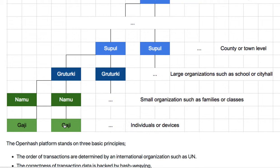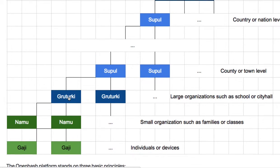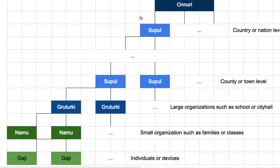Each Gazi represents each market participant — they are called Gyanu. Each Gazi represents each Gyanu, and they produce transaction data. From Namu up to Onuri, all of those levels are a kind of Gyanu — they are weaving data.